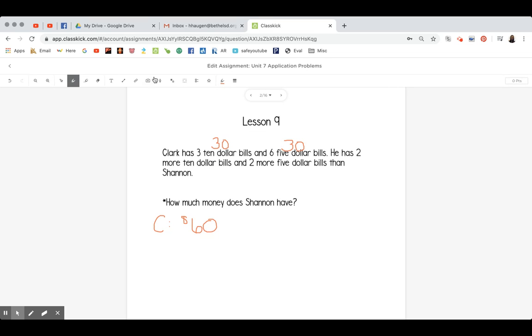Now we know, let me change pen colors here. Now we know that he has two more $10 bills. Well, two tens would be $20, right? And two more $5 bills. Well, two fives would be $10 more than Shannon.